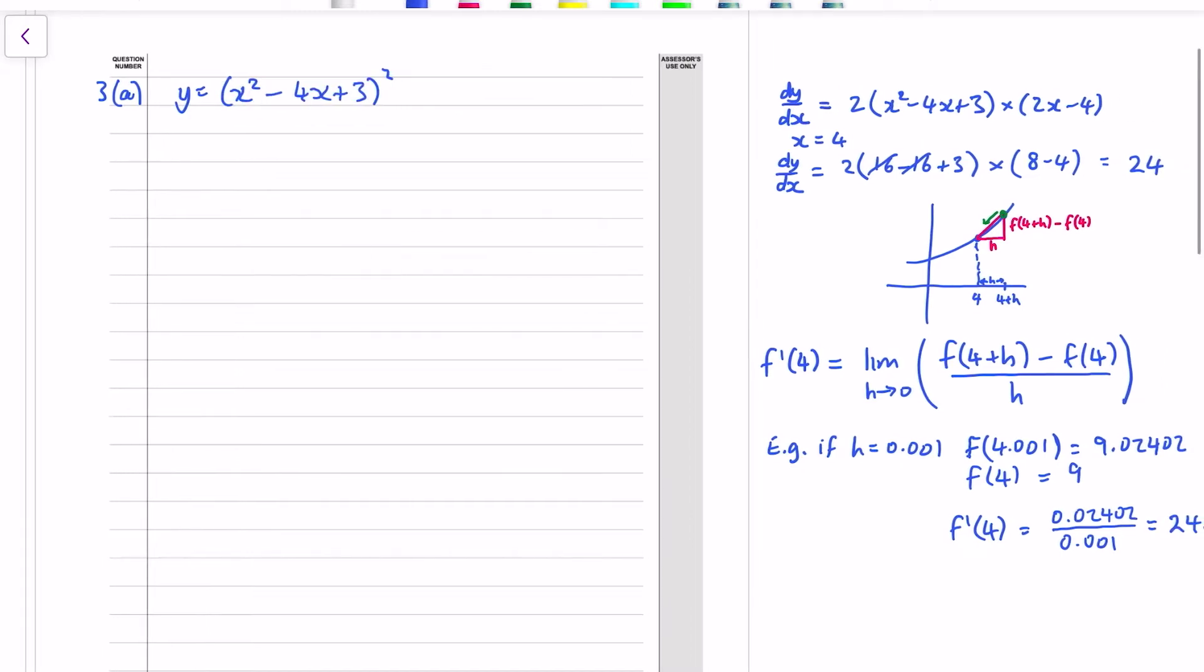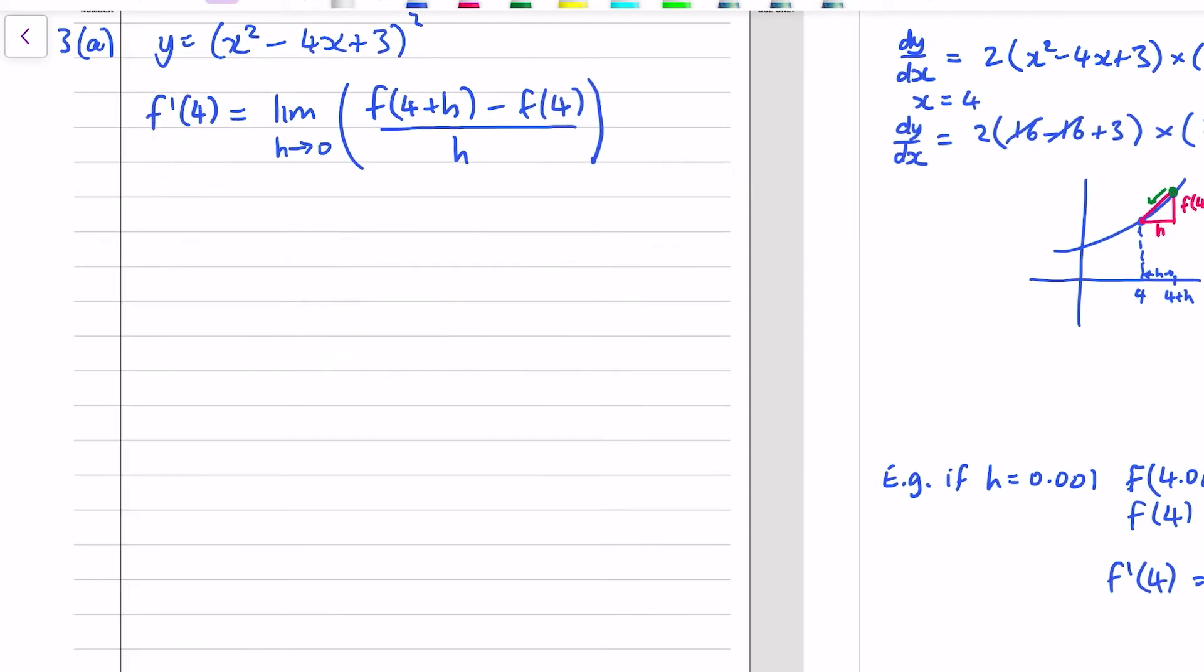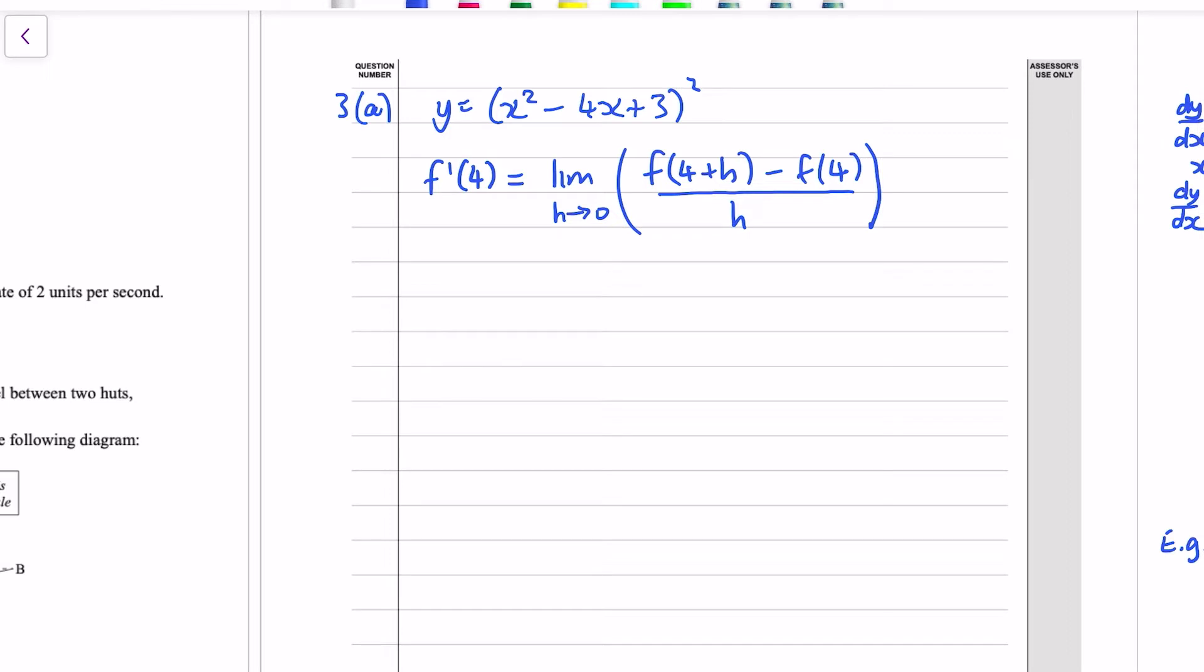So actually the only thing I do want to keep is the f dash of 4. That's my starting point. Find the slope using first principles. So f dash of 4 is this quantity here. So what I need to do is replace the x values of 4 plus h, where h is not 0.001. It's just a small number, but I have to keep it as h. So I've got 4 plus h all squared minus 4 lots of 4 plus h plus 3 all squared. And then minus f of 4, but f of 4 is just 9, it's a constant. And divide that all by h.